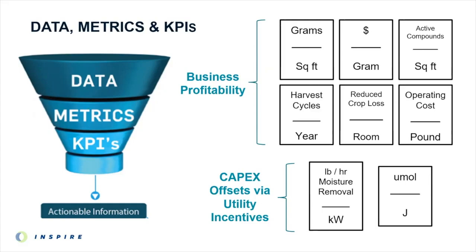Also important are other ways to offset CapEx via things like utility incentives and benchmarking your subsystems like HVACD and lighting — for example, pounds per hour of moisture removal per kW of energy, or micromoles per joule on the lighting side. These need to be top of mind from the beginning of the design and construction process so that all the decisions made along the way have these goals in mind. We talk about these metrics every day with clients because they're so important. We look at things like how your grams per square foot and dollar per gram get impacted as a result of better environmental control, homogeneous airflow, and removing unnecessary mechanical equipment from inside a cultivation room.